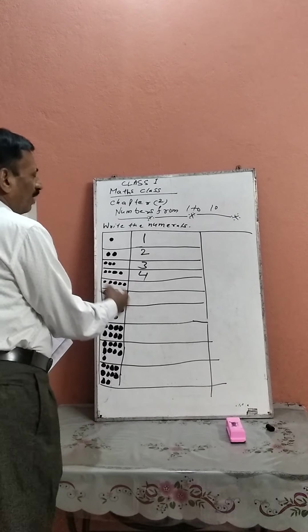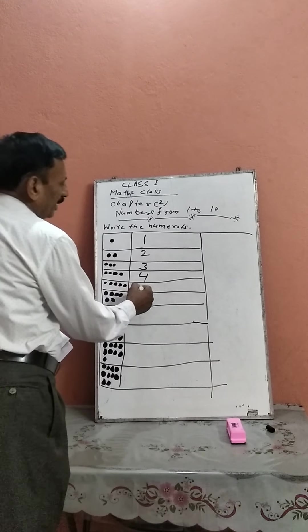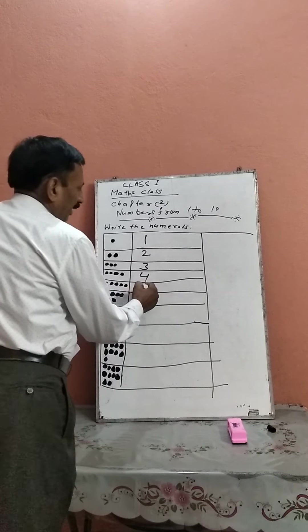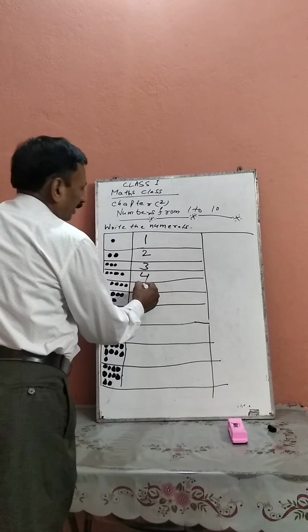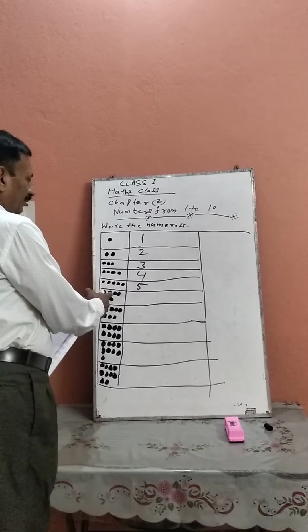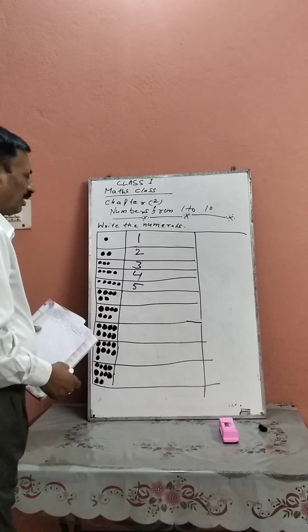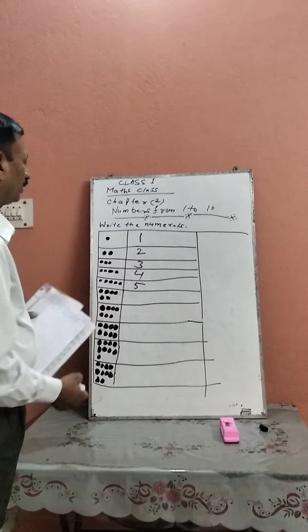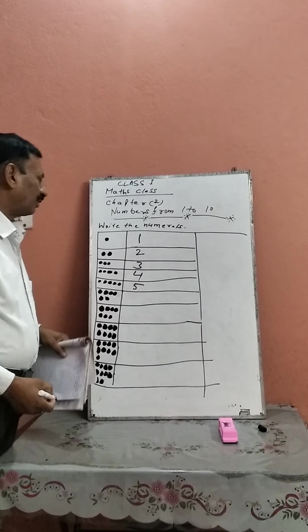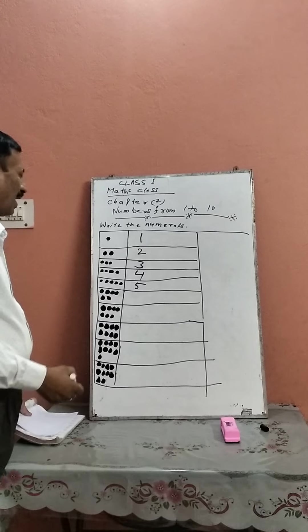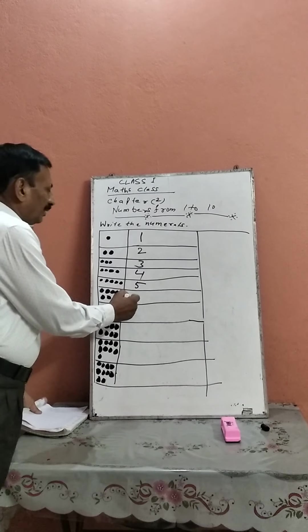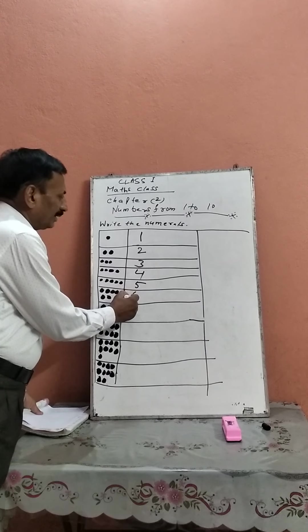Next, there are five objects in the box, then you should write the numeral 5. Next, there are six objects in the box, therefore you should write the number 6.